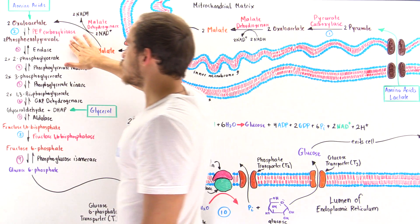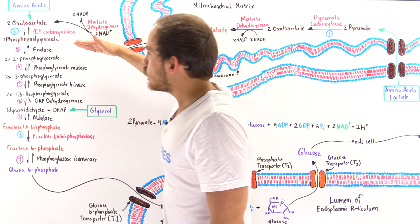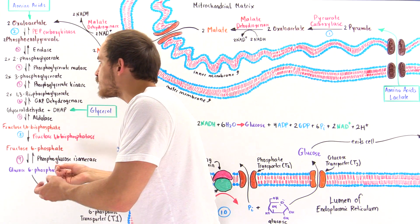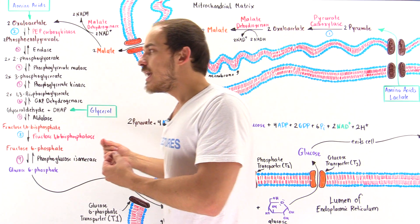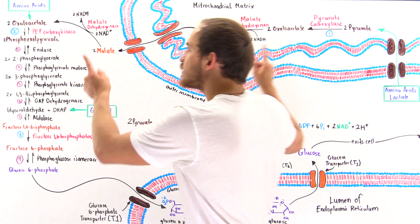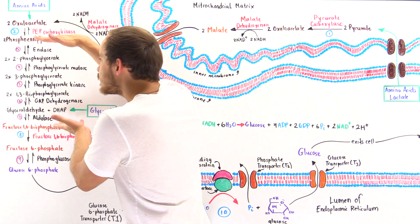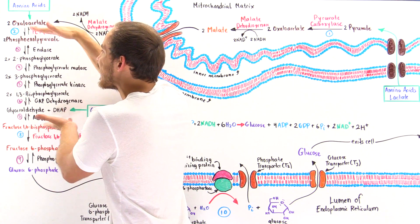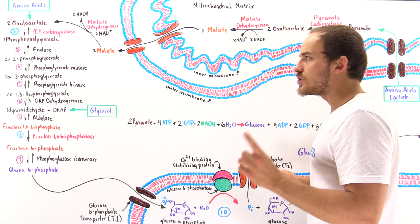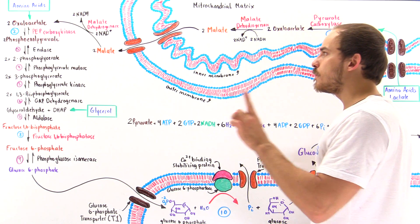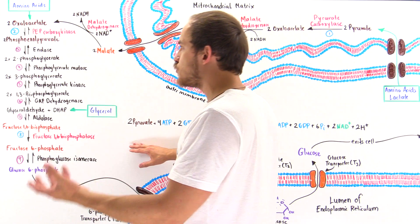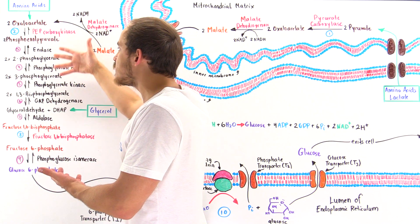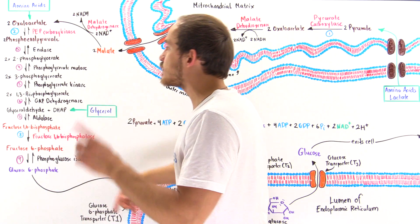Once we carry out step number two and form the phosphoenolpyruvate, then we have steps three through seven, which are essentially the same exact steps as in glycolysis except in reverse. We can use these steps — and not bypass them like the previous ones — because they have a Gibbs free energy value very close to zero, meaning they are at equilibrium. If the conditions inside the cell favor gluconeogenesis, these reactions will take place spontaneously.